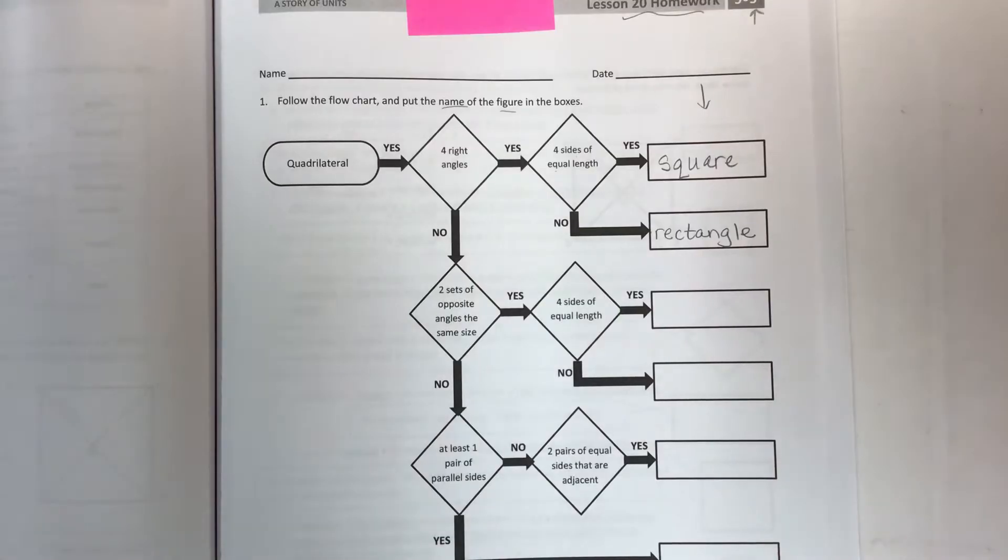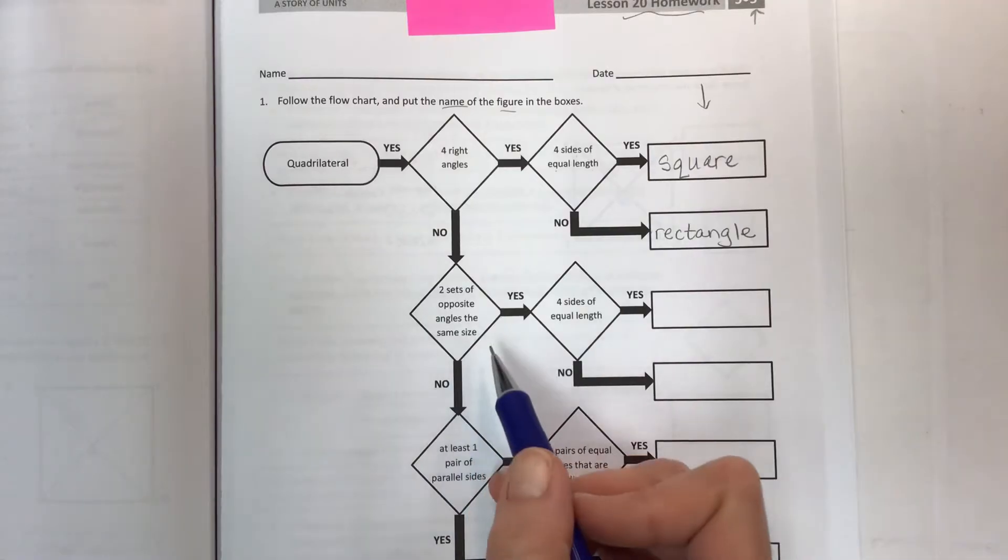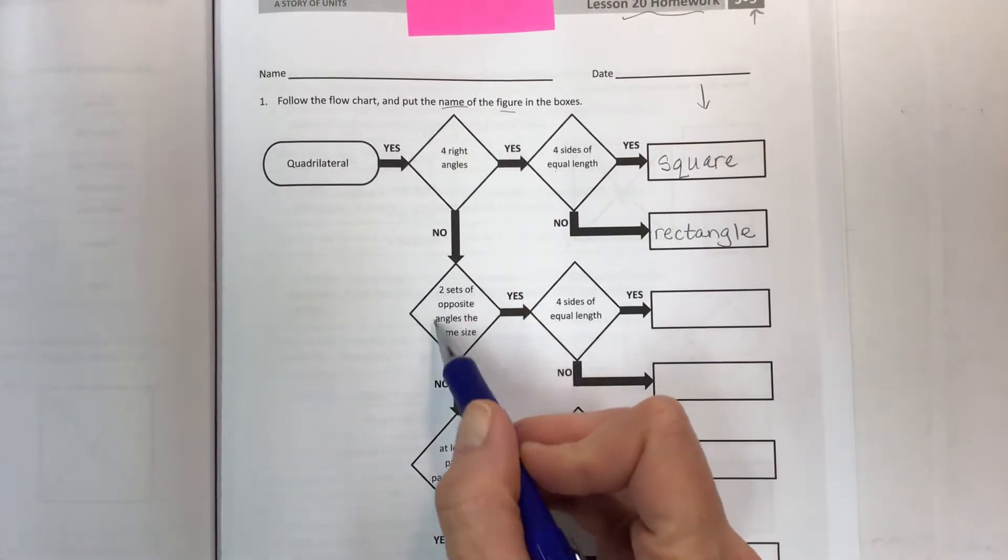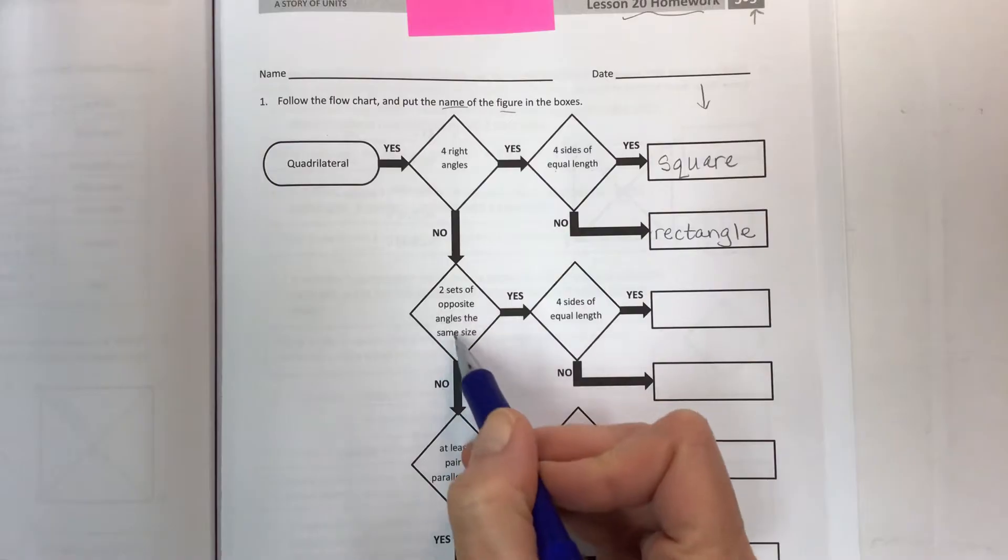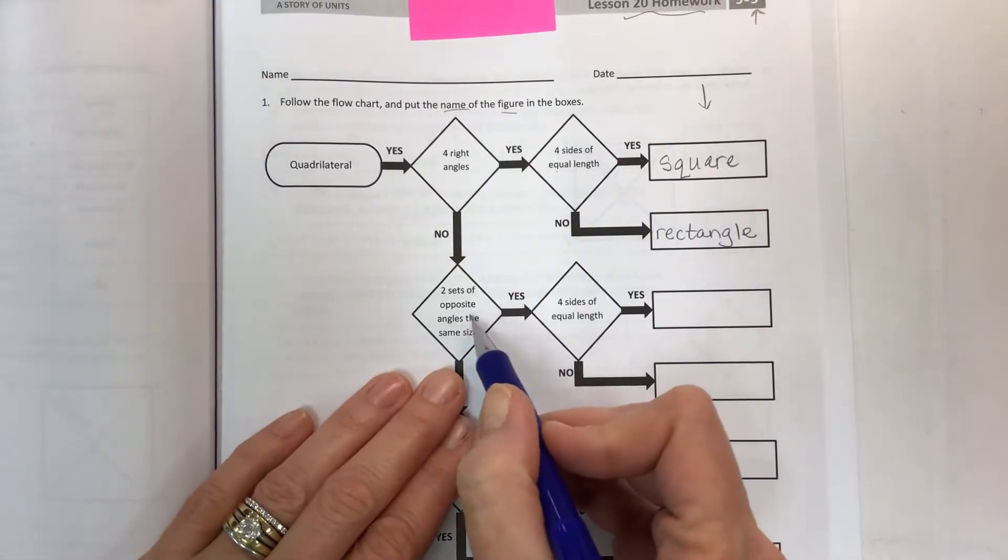So now we're talking about parallelograms because that's one of the attributes that parallelograms have. So all the different parallelograms we studied—well if we do have two sets of opposite angles the same size, yes.